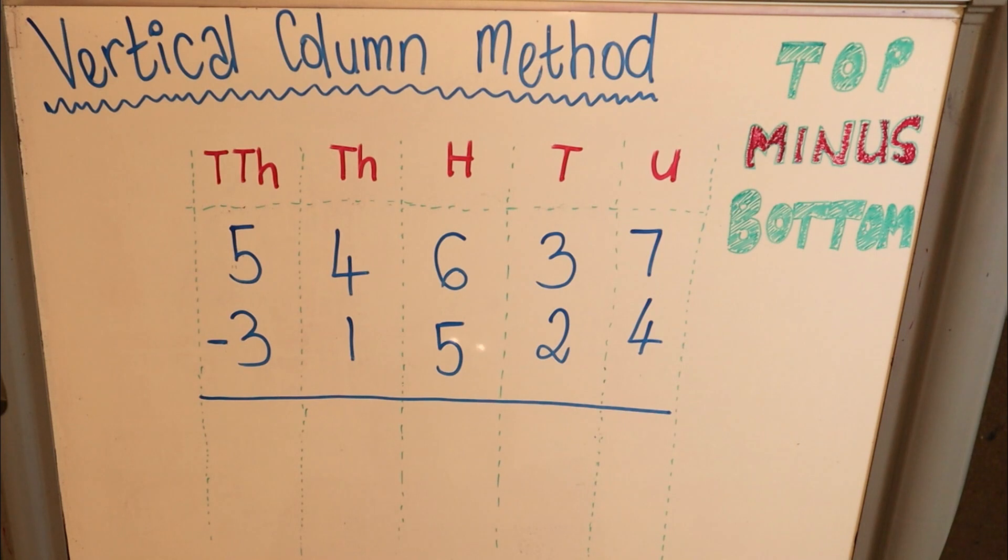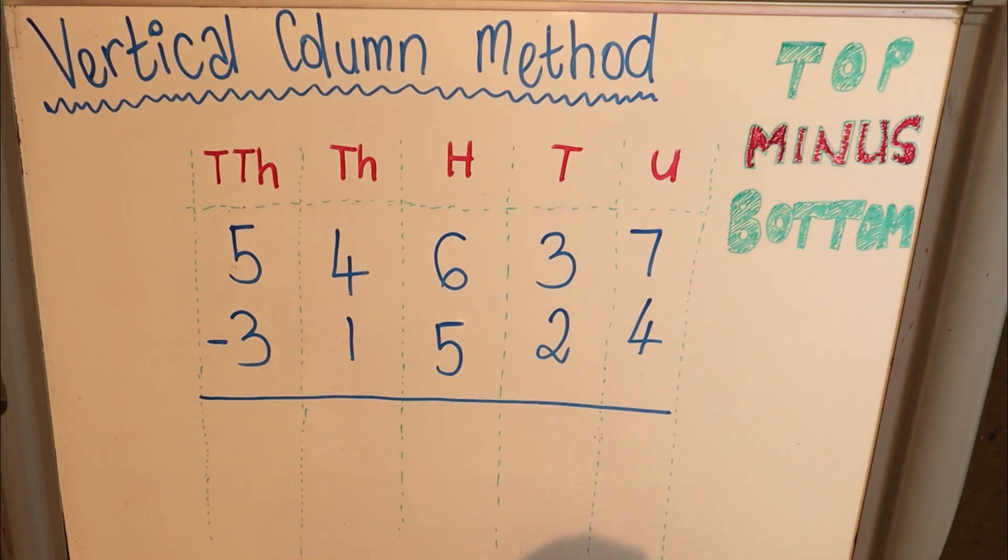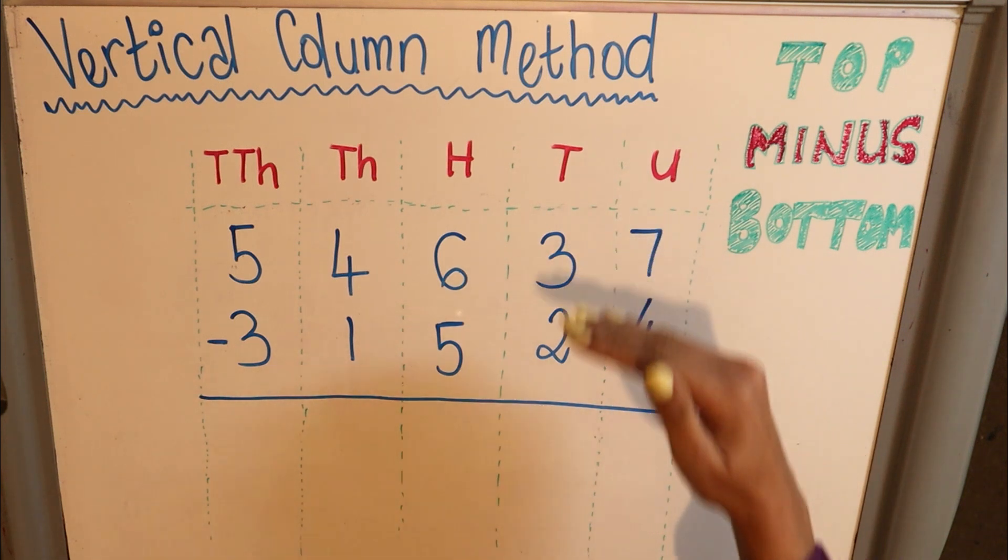Hi there, grade 6. In this video I'm going to be looking at vertical column method subtraction. Now the number one rule about this is you need to remember whenever you subtract, the rule is always going to be top minus bottom.